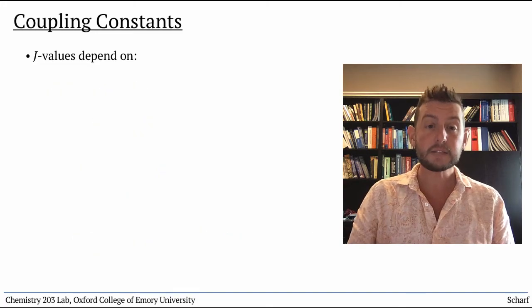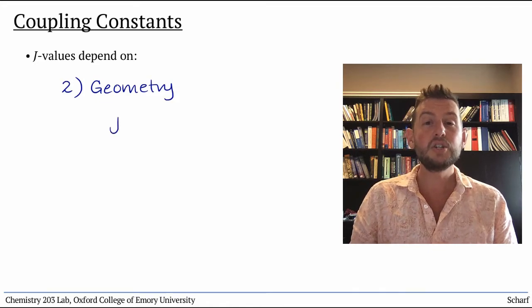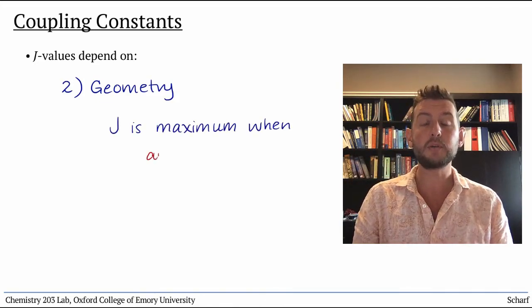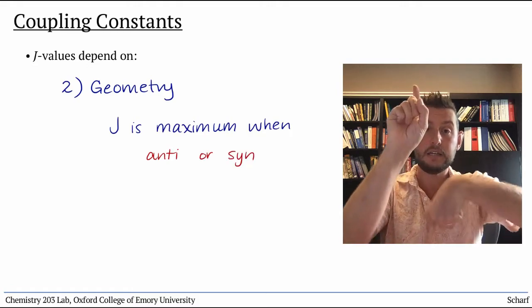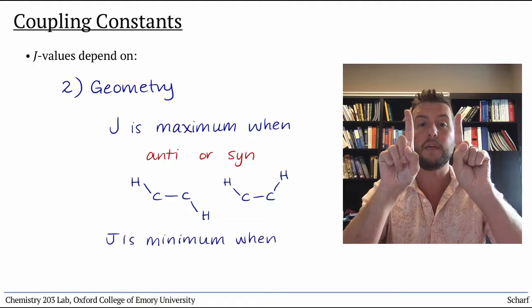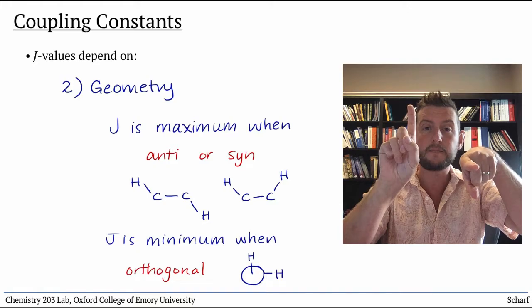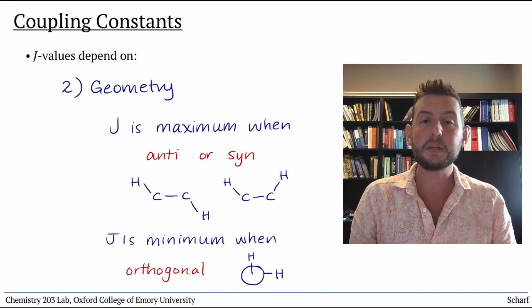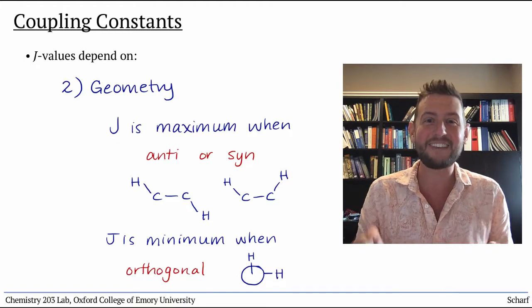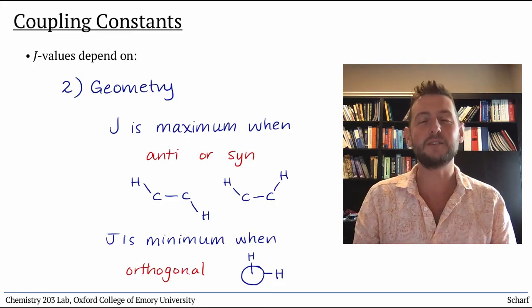The next factor that influences J values is geometry. In general, J values are at a maximum when the two coupled protons are anti, or syn, to one another, and at a minimum when they are orthogonal, or 90 degrees from one another. This is called the Karplus relationship after Martin Karplus, one of the three Nobel Prize winning chemists I've had the luck to meet. We won't be concerned with the details of this relationship.